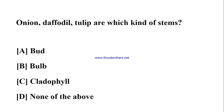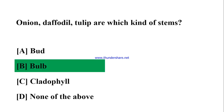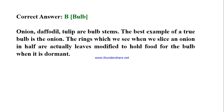Onion, daffodil, and tulip are which kind of stems? A) Bud, B) Bulb, C) Cladophyll, D) None of the above. Correct answer: B) Bulb. Onion, daffodil, and tulip are bulb stems. The best example of a true bulb is the onion — the rings we see when we slice an onion in half are actually leaves modified to hold food for the bulb when it is dormant.